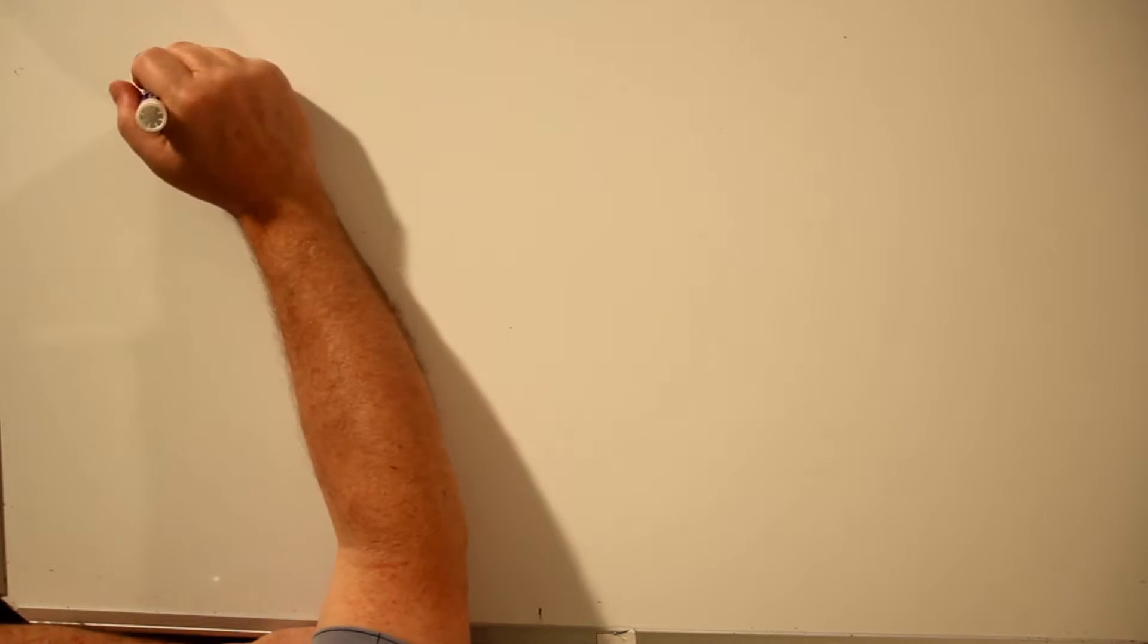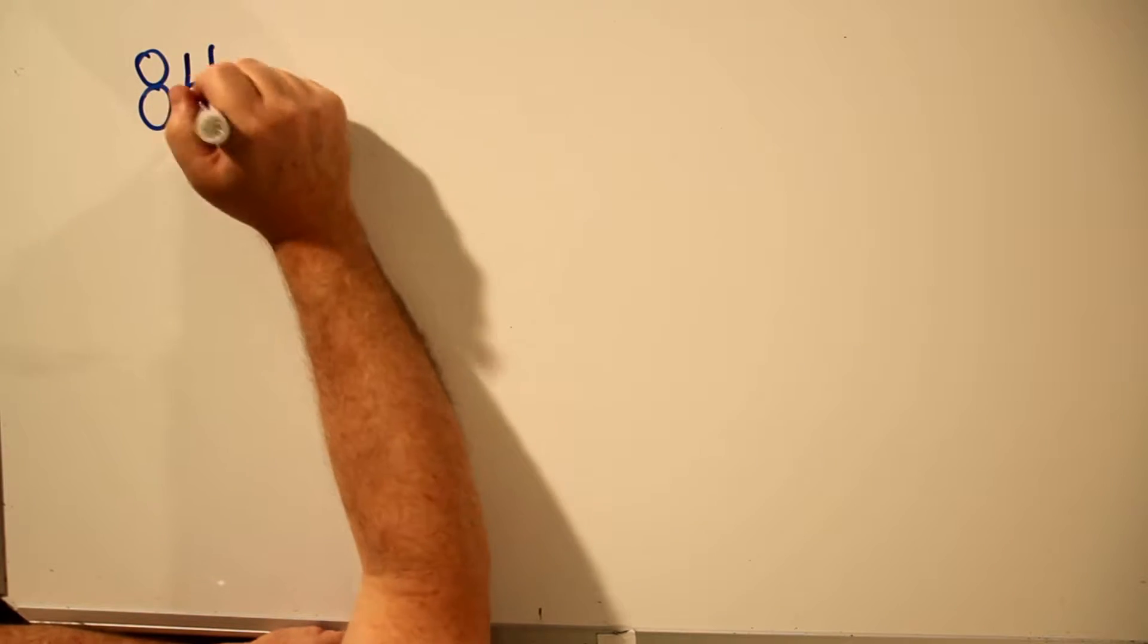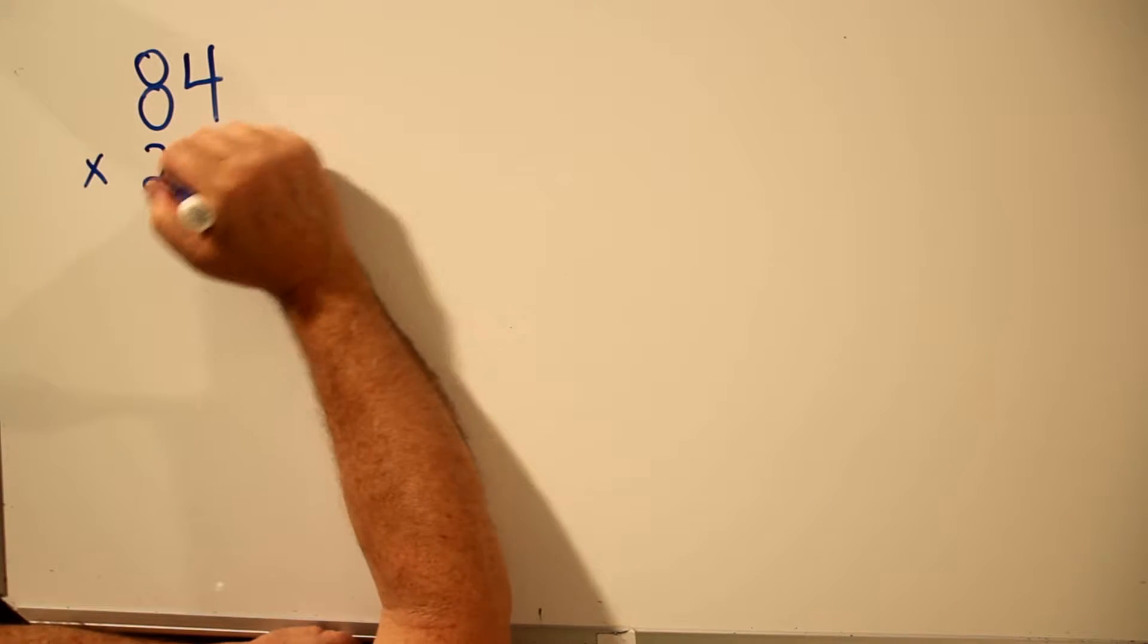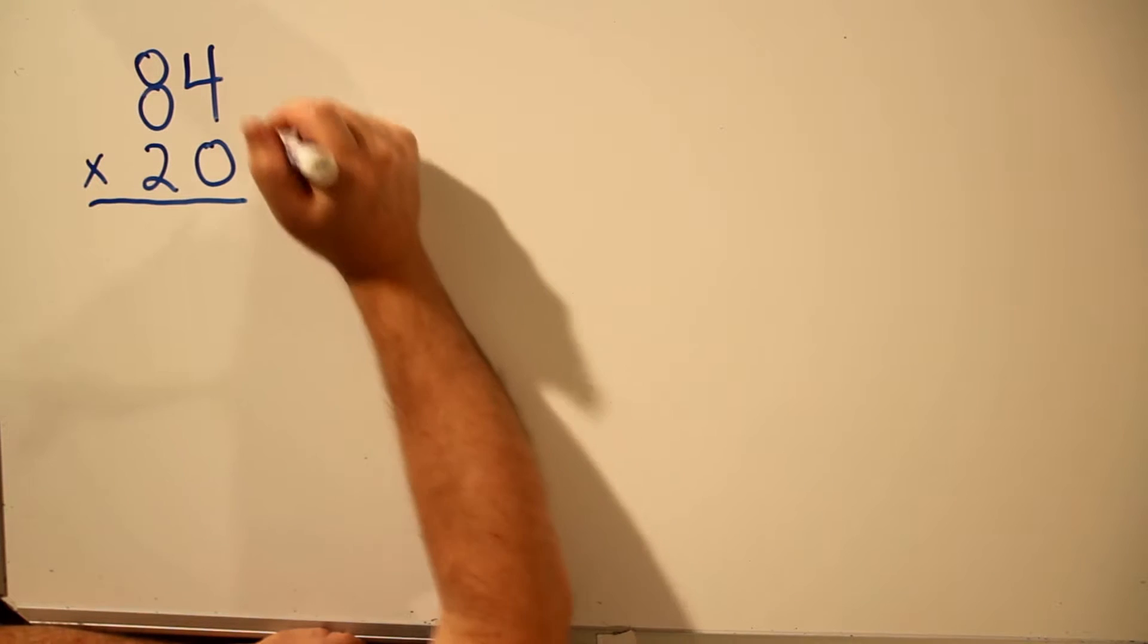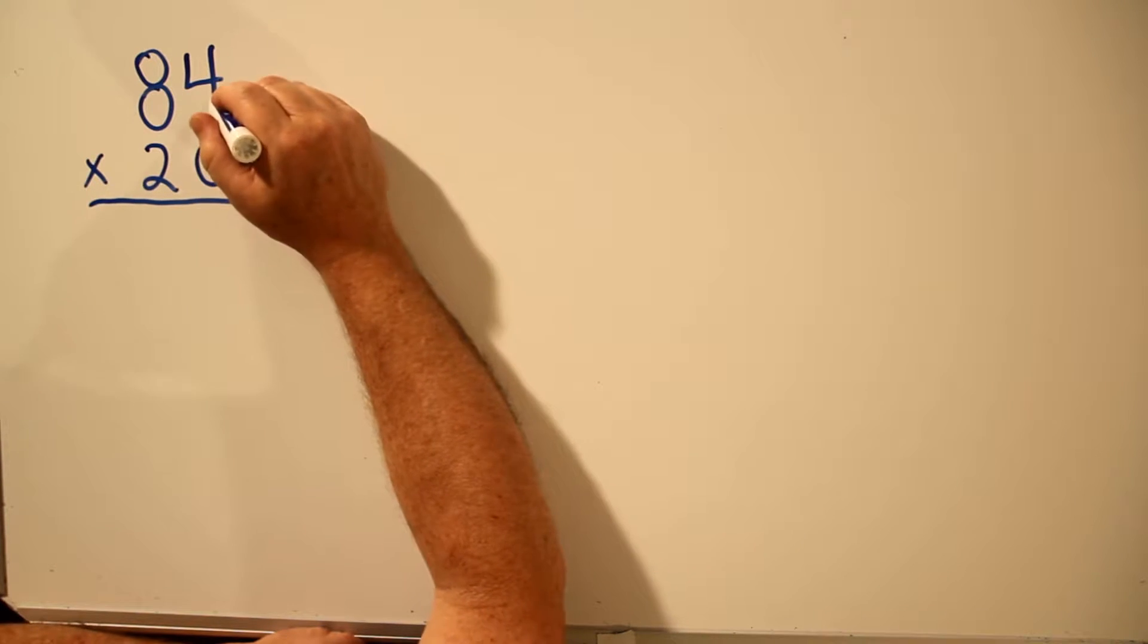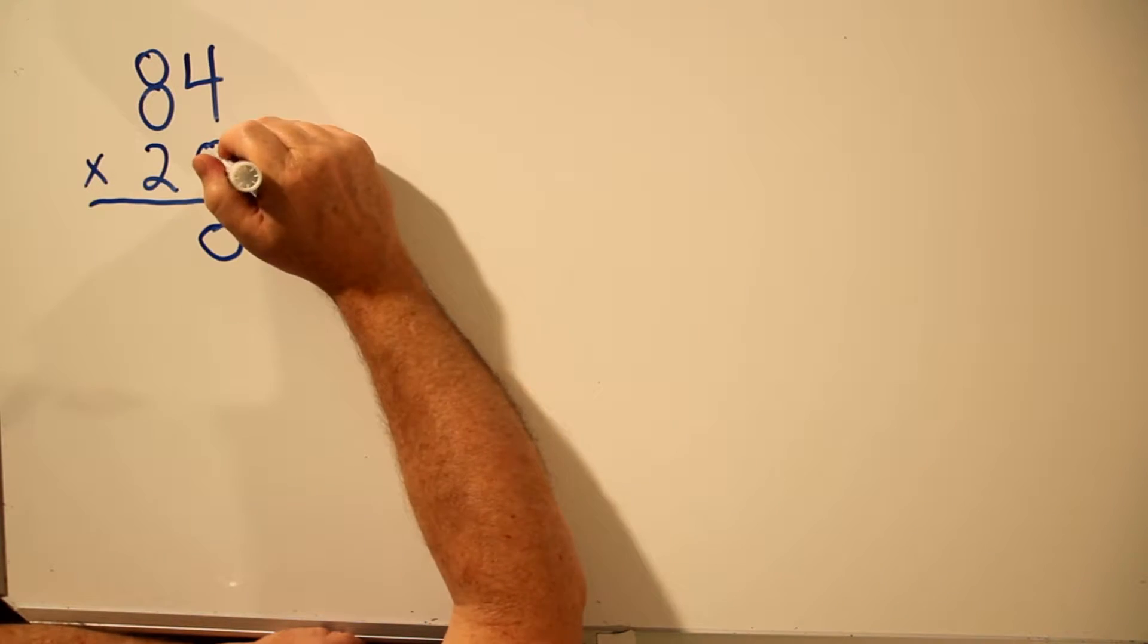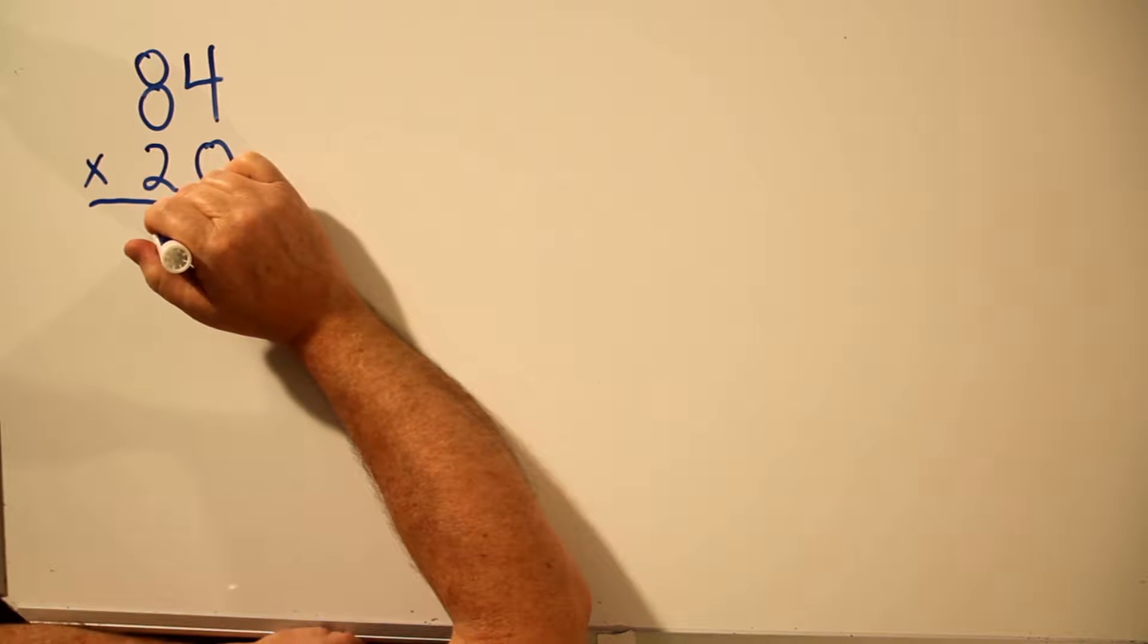We're going to multiply by a two-digit number in a special case where the bottom number has a zero in it. For example, 84 times 20. When the bottom number has a zero in it, I'll first multiply it the long way through. 0 times 4 is 0. 0 times 8 is 0.